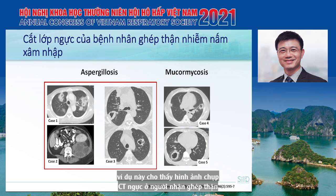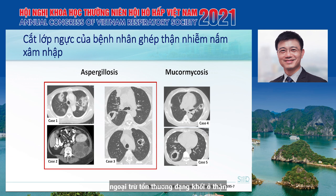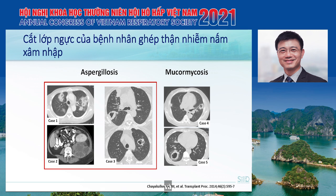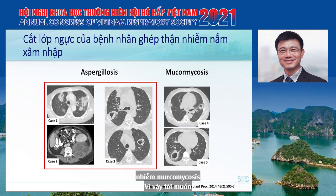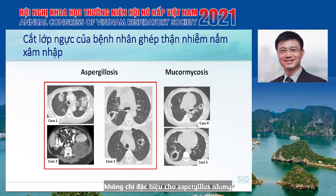This example shows CT scans of the lung in kidney transplant recipients with invasive mold infection. You can see cavities in several patients. Three of these patients were diagnosed with aspergillosis, and two patients had mucormycosis. This emphasizes that lung imaging is not specific to aspergillosis alone but can also be caused by other mold infections, in particular mucormycosis.